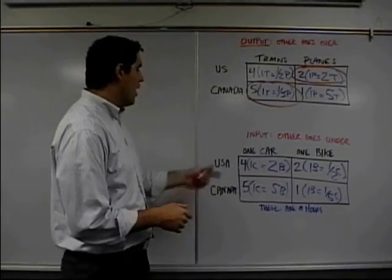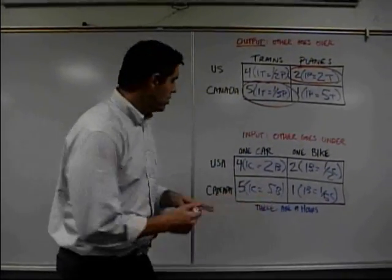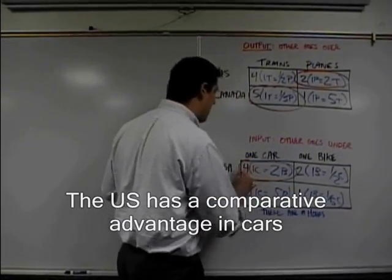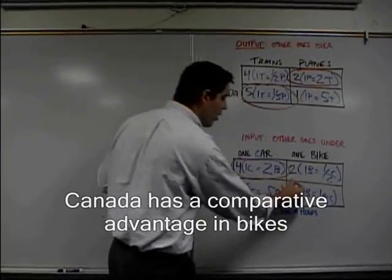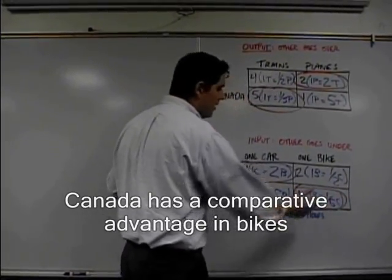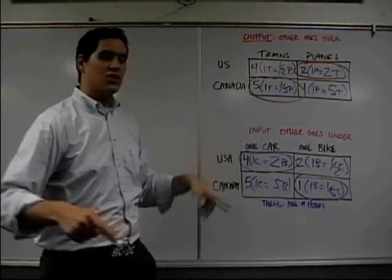Well, would you rather have a country that gives up two bikes or only gives up five bikes? Two, done. The United States has a comparative advantage in the production of cars. Over here, you rather have the country that only gives up one-fifth. So Canada has a comparative advantage in the production of bikes. That's it. That's a concept. Output, input, questions.